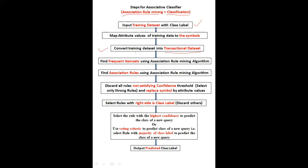After converting the training dataset into the transactional dataset, we find the frequent itemsets using an association rule mining algorithm — the Apriori algorithm is used. You can use either the Apriori algorithm or the FP-Growth algorithm to find the frequent itemsets. Then from this frequent itemset, you can find the association rules. The logic for calculating the association rules is the same as what you learned in the Apriori algorithm in the previous session.